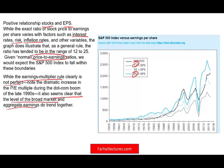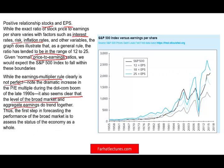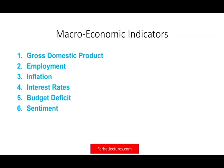As a company earns more, the stock price should go higher — and how much higher? It's a multiple of their earnings: 12 times, 18, or 25. So the first step in forecasting the performance of the broad market is to assess the status of the economy as a whole. To do so, we have to look at certain economic indicators, which is what we need to look at in this session.